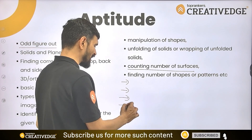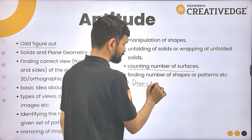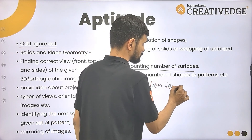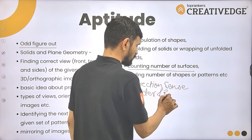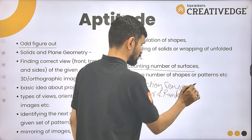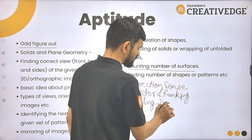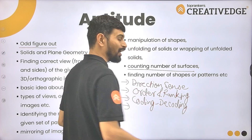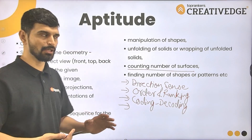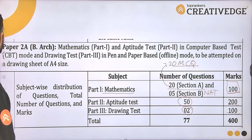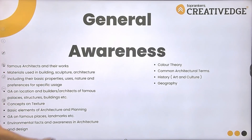Along with the core aptitude topics, a few other question types have been asked on and off: direction sense, order and ranking, and coding-decoding. These are not a regular feature but have appeared in the recent past and should be noted.